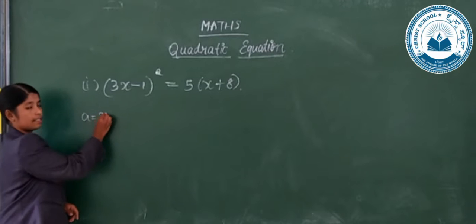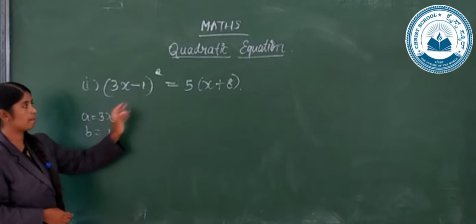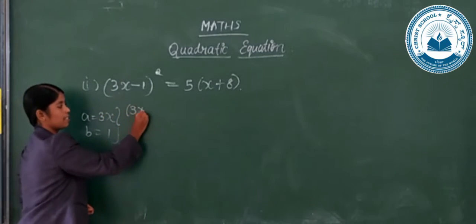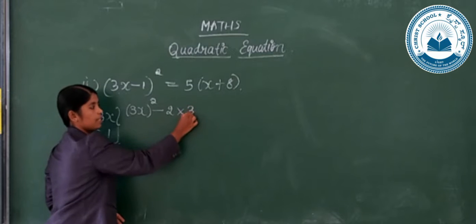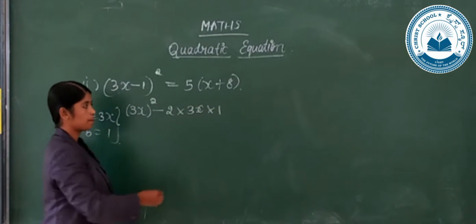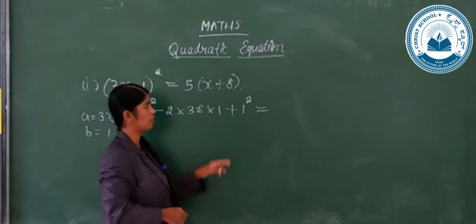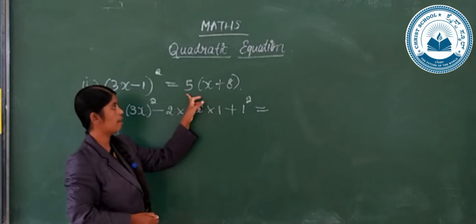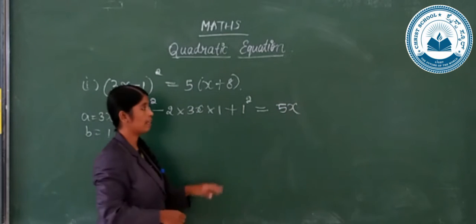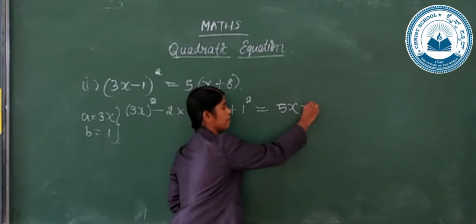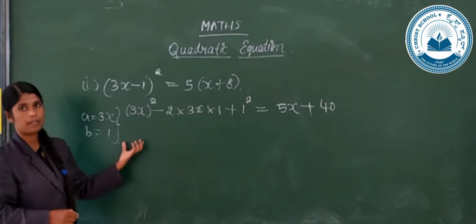We apply the a minus b whole square formula. Here a value is 3x and b value is 1. So we expand: a squared minus 2ab plus b squared — that is (3x)² minus 2 into 3x into 1 plus 1². On the right-hand side we carry out the binomial multiplication: 5x times 5x gives terms we collect, then bring all numbers to one side.